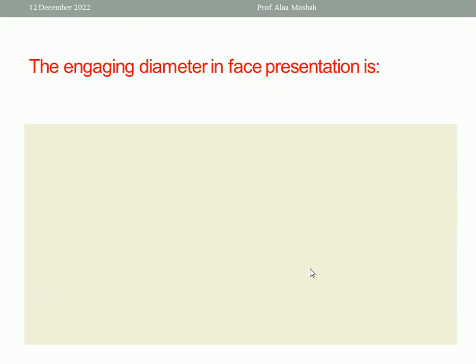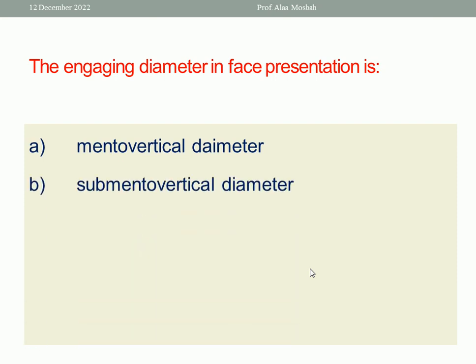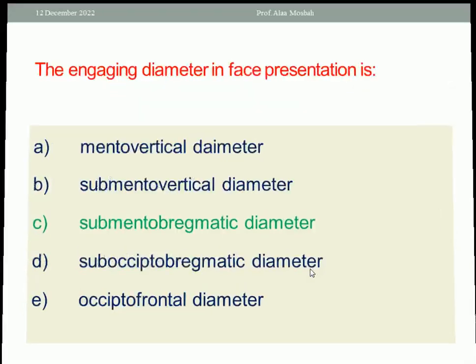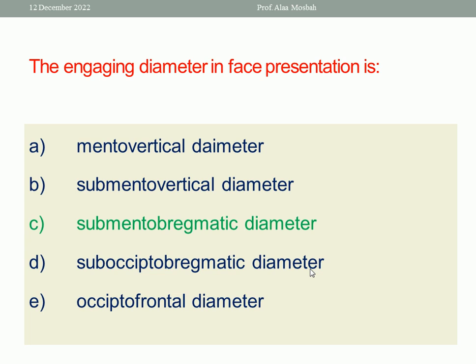The engaging diameter in face presentation is — A: mento-vertical diameter. B: submental vertical diameter. C: submental bregmatic diameter. D: suboccipitobregmatic diameter. E: occipitofrontal diameter. The one best response is submental bregmatic diameter, which is 9.5 centimetres.